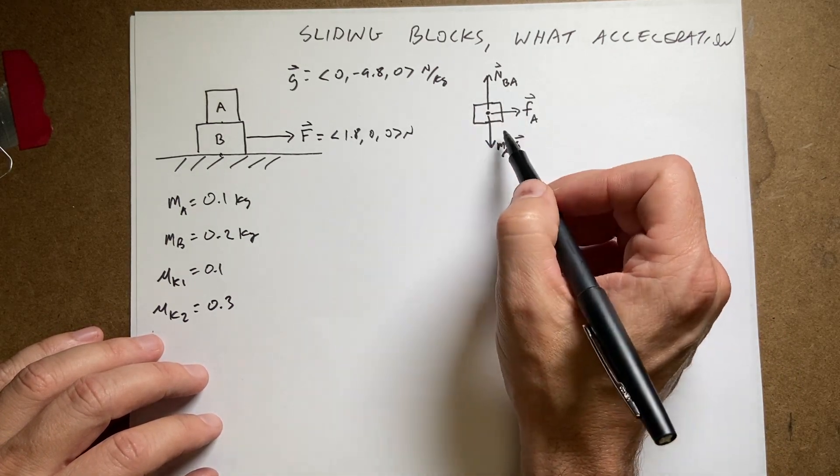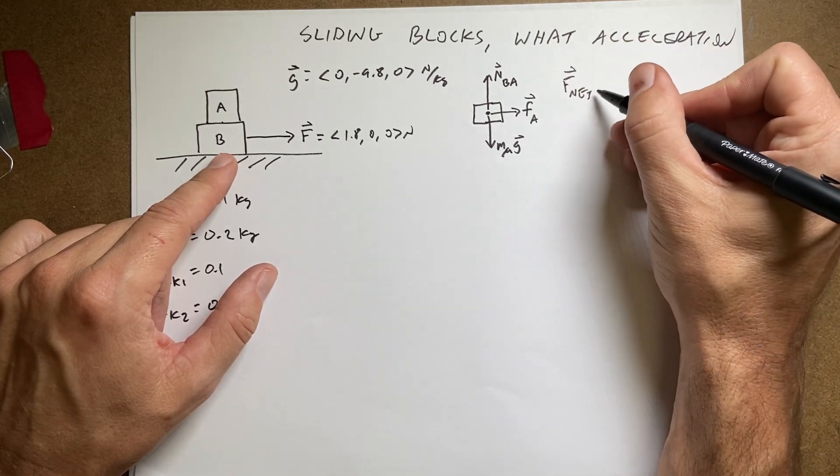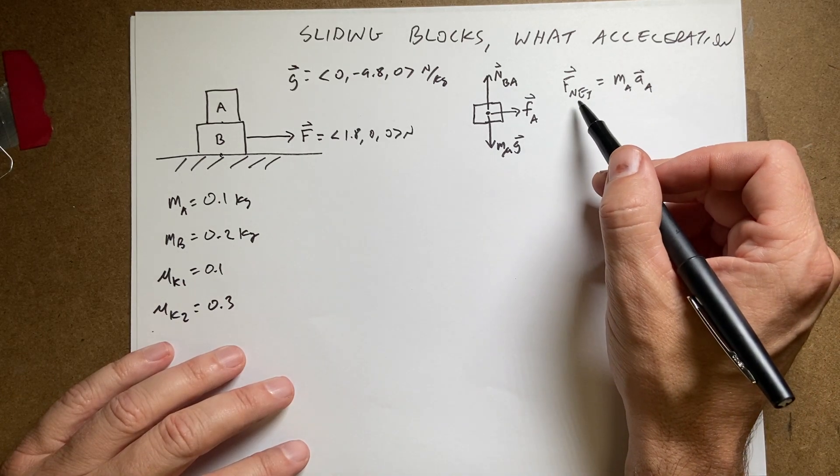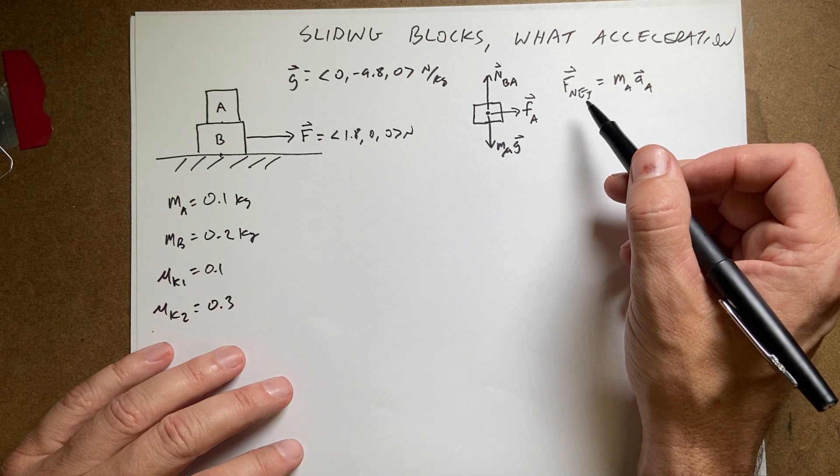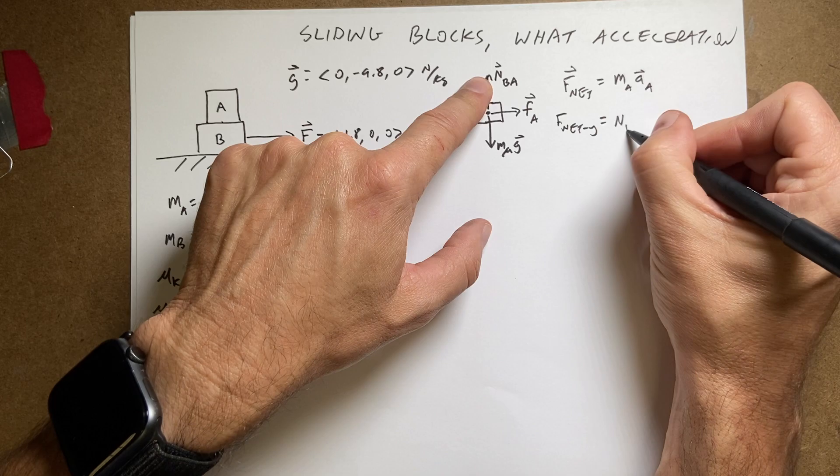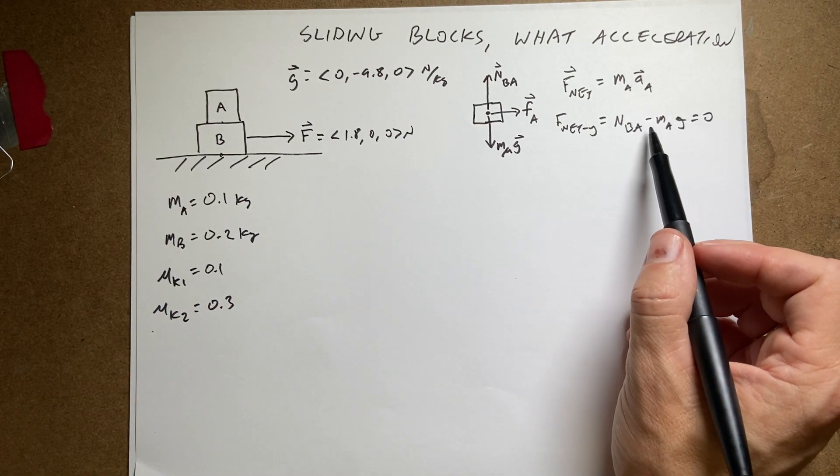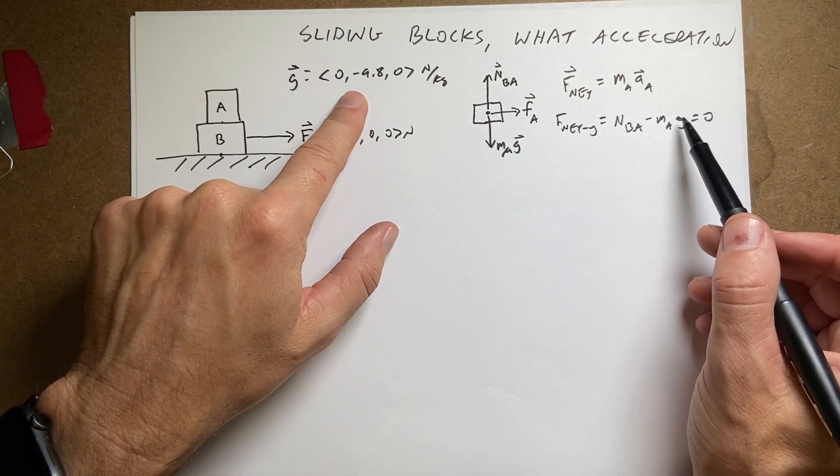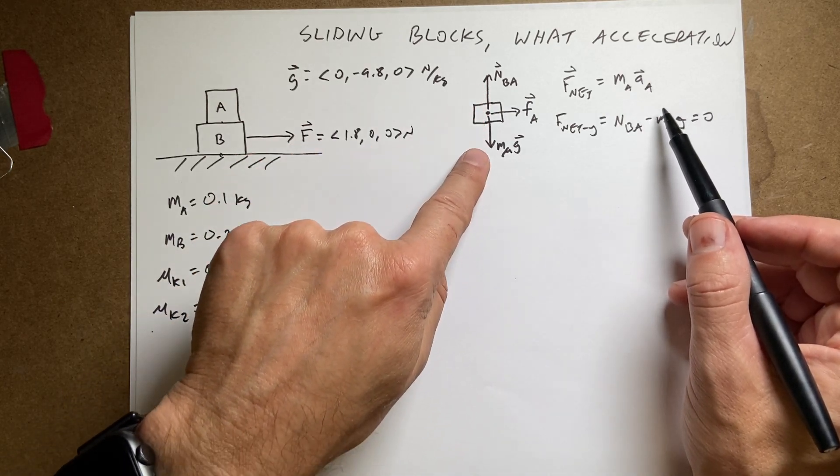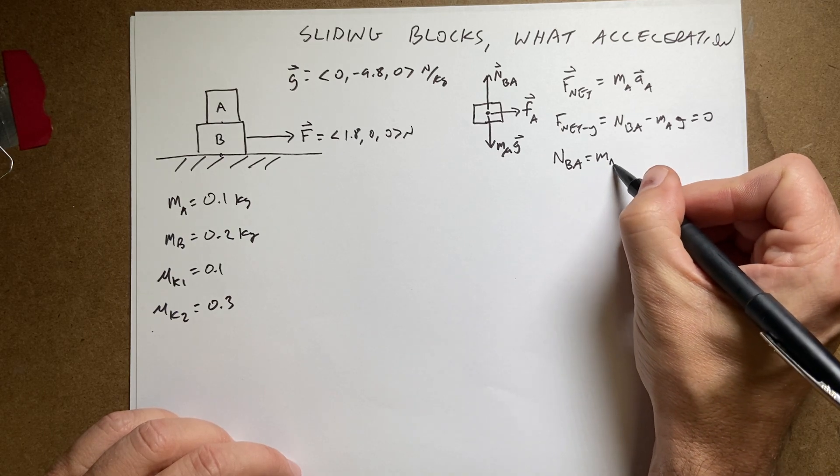So actually, in this case, I should be able to find the acceleration of this block. So I can write f net A is going to be M A acceleration A as vectors. Now, sometimes it's better to put things in terms of X and Y direction. So let's just look at this in the Y direction first. So f net Y is going to be N B A minus M A G equals zero. Why is this minus? This is minus because G is the magnitude of the gravitational field. So it has a magnitude of 9.8. And it's minus because it has a negative Y component. Why is this zero? It's zero because the acceleration in the Y direction is zero. The block stays on the other block. So from this, I can say the magnitude N B A equals M A G.